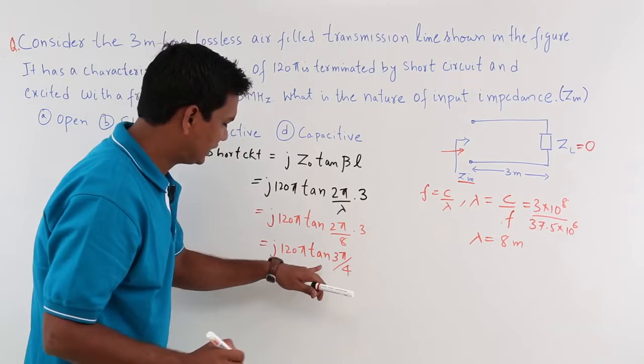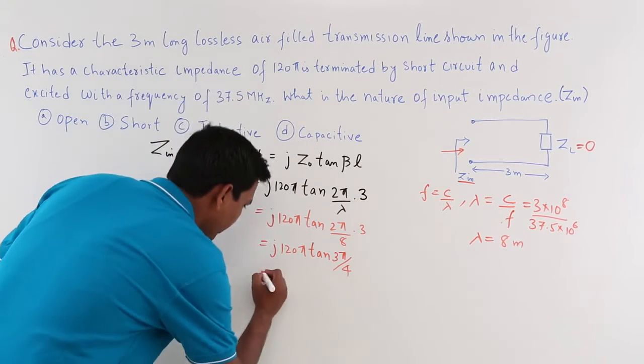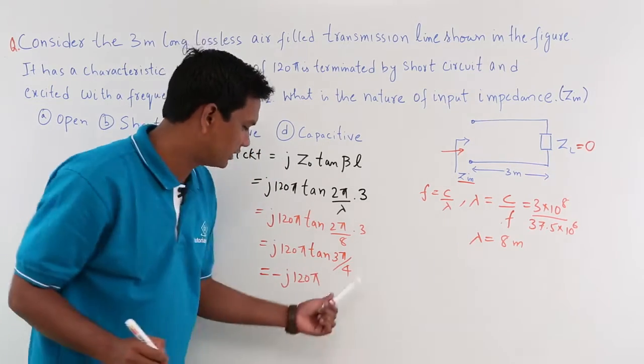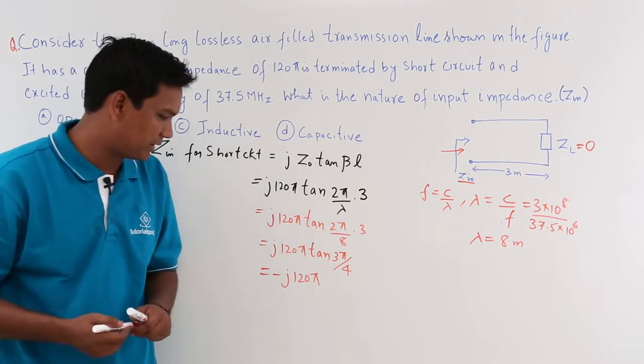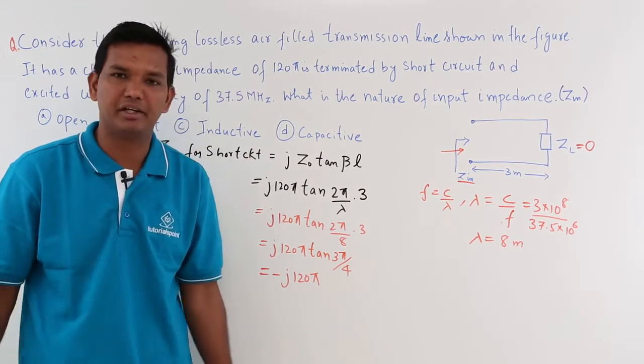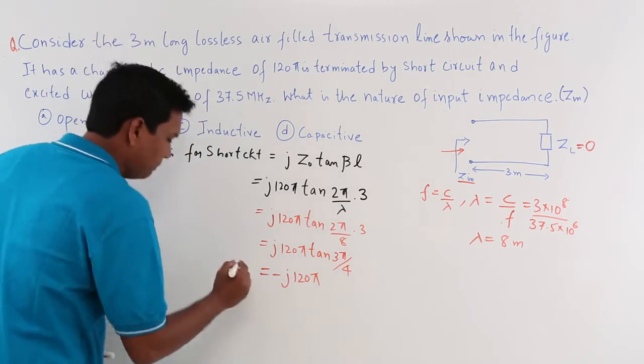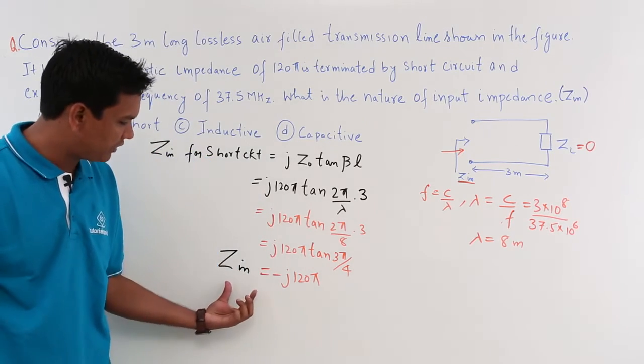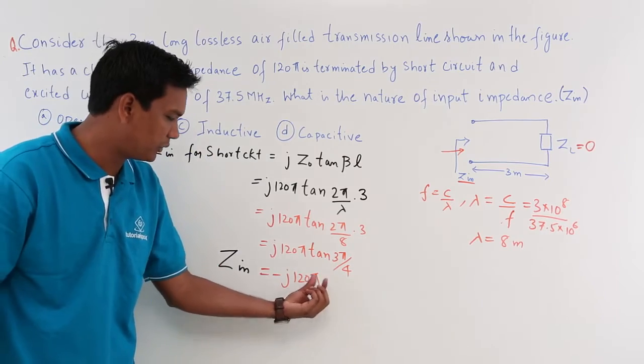Now what is tan(3π/4)? This comes out to be -j120π. We know that tan(3π/4) is nothing but -1. So this comes out to be -j120π and this is what is my input impedance. This is what is called your input impedance.